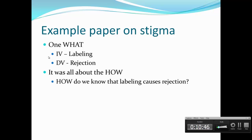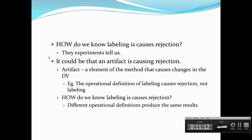Let me reiterate: go back to the example paper on stigma. That paper was focused around one what question — the IV of labeling, the DV of rejection. And while it was focused on that what question, the meat of the paper was all about how questions: how do we know that labeling causes rejection? You might think that's a simple question with a simple answer — because the experiments tell us. Well, that's not as trustworthy as it seems, because it could be that an artifact is causing rejection and not labeling. An artifact is an element of the research method that causes changes in the dependent variable. When we see changes in the DV between conditions, we want to conclude that the IV is causing it, but there could be something else — an artifact.